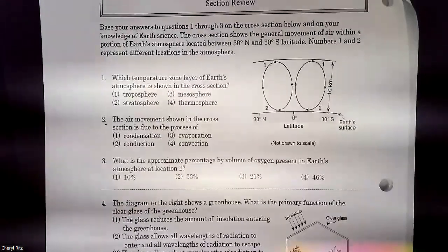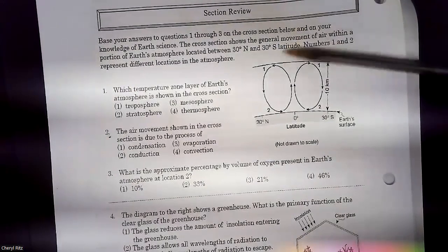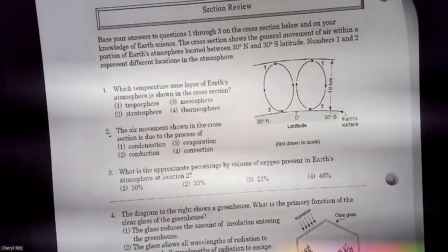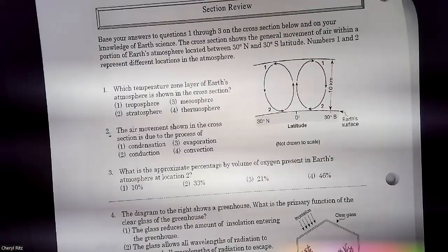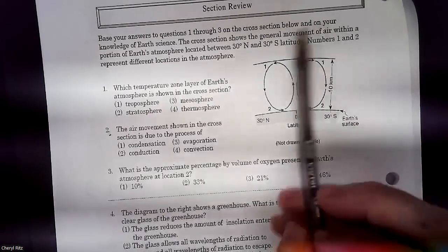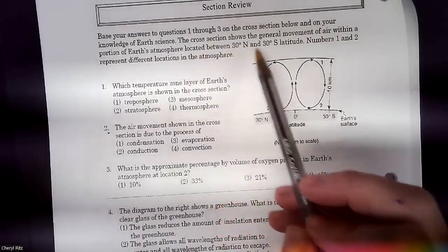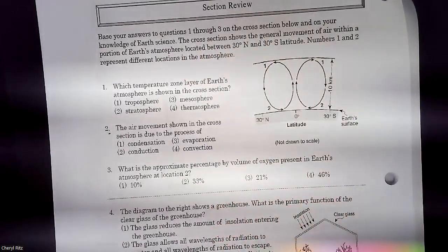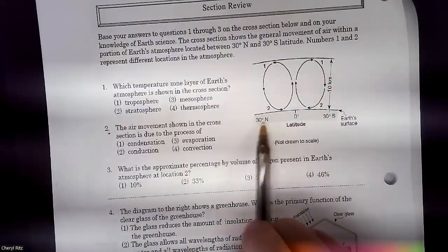Actually, I think there's another picture here. I'm curious, did anybody skip this reading? Because we thought it was directions, right? I don't recommend skipping that. At least read it so you know what the heck you're doing. Questions one through three on the cross-section below and your knowledge of Earth science. The cross-section shows the general air movement within a portion of the Earth's atmosphere located between 30 north and 30 south degrees latitude. Numbers one and two represent different locations in the atmosphere. So, it just told us this is how the air moves around in the atmosphere between 30 north and 30 south.